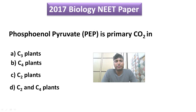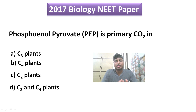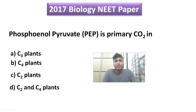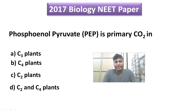Now that we have understood the C4 pathway, we can answer the question: phosphoenolpyruvate is the primary carbon dioxide acceptor in — A: C3 plants, B: C4 plants, C: C2 plants, or D: C2 and C4 plants. We just saw in the pathway that PEP, phosphoenolpyruvate, is the first compound and the primary carbon dioxide acceptor in C4 plants. I hope you have understood the concept. For any doubts or suggestions, please mention them in the comment section. This is Praful signing off — see you in the next video. Take care, thank you, bye bye.